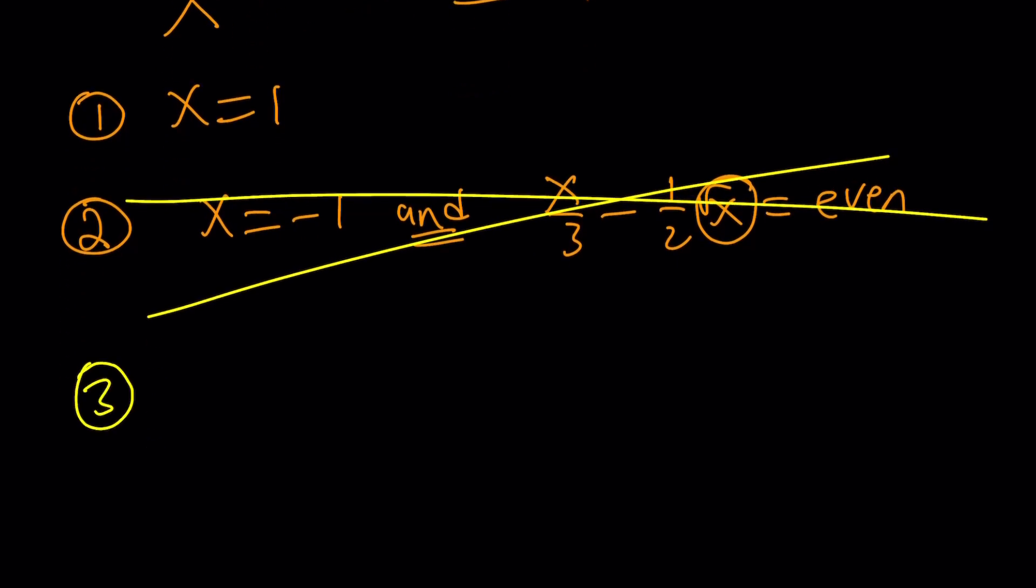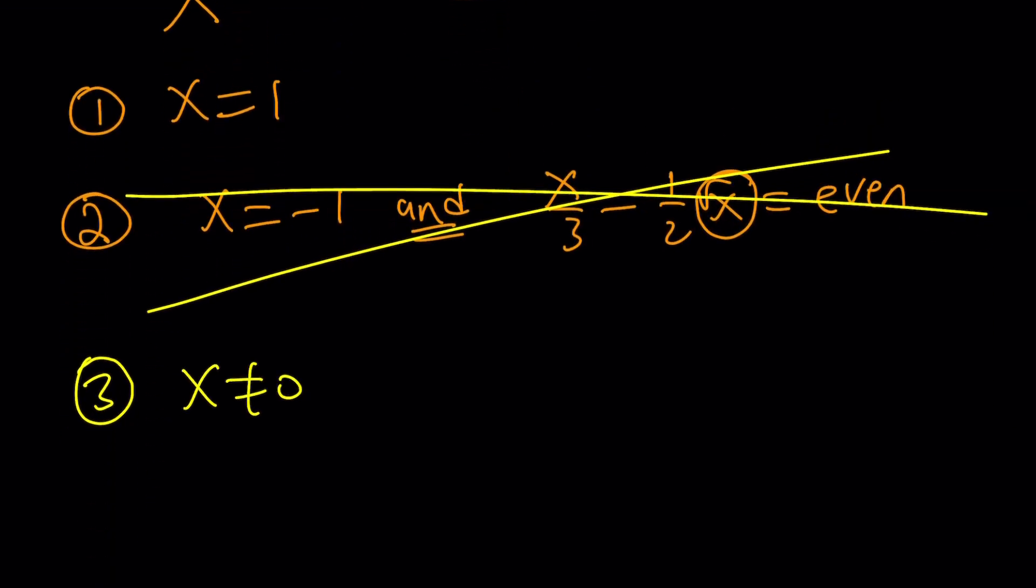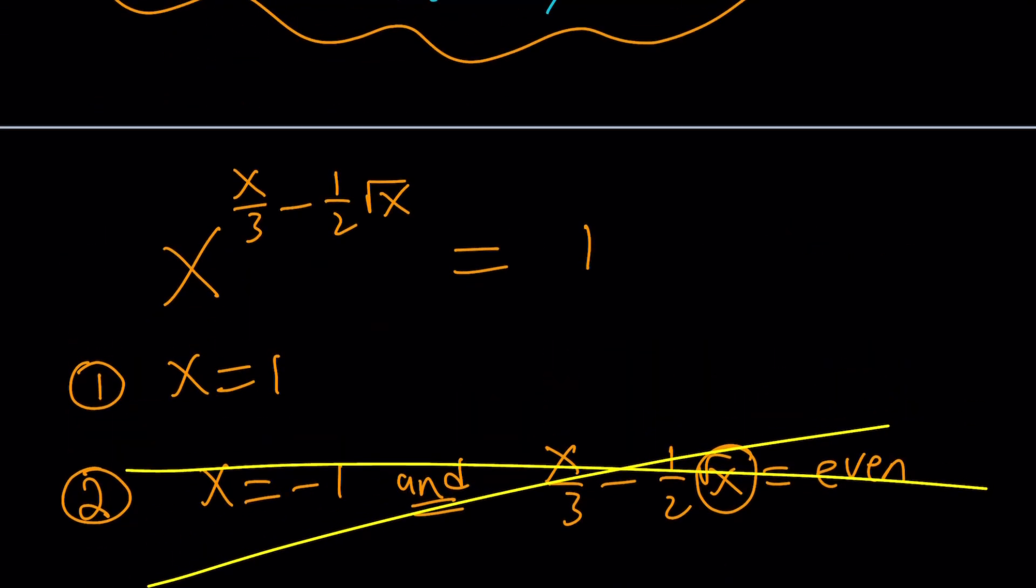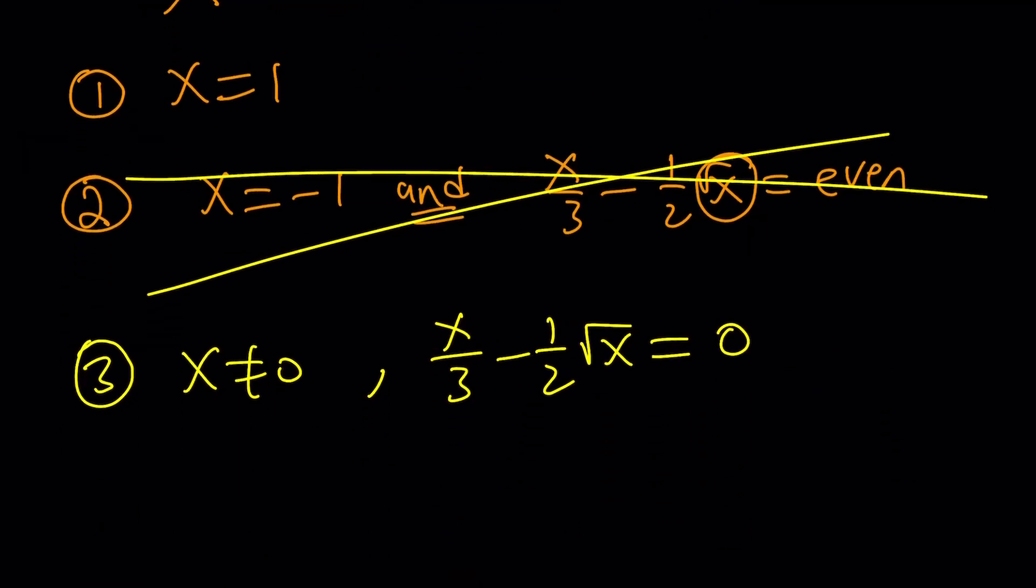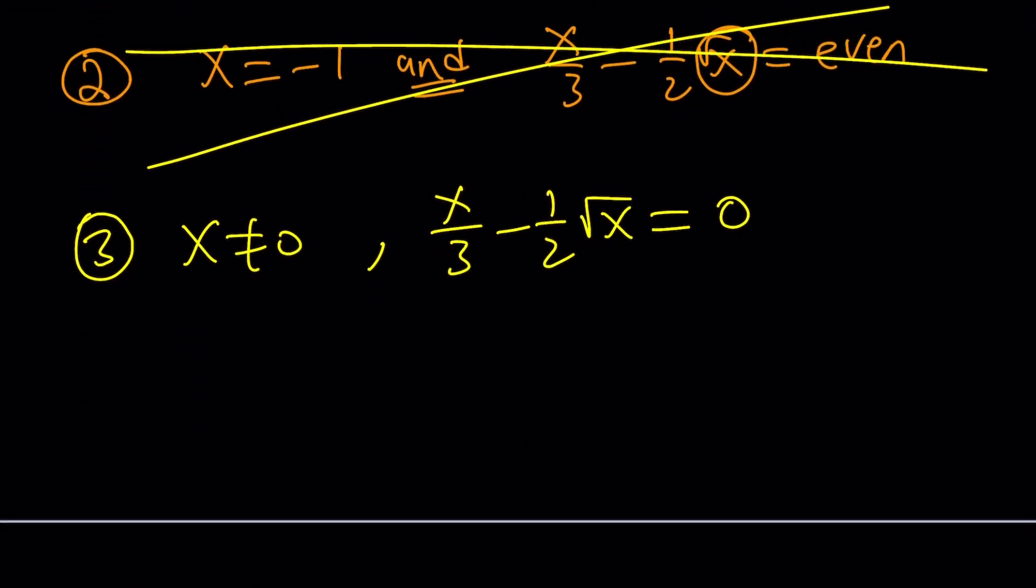Number 3. Number 3 is exponent is 0, base is not 0. So x does not equal 0. But I do want x over 3 minus 1 half of root x to be equal to 0. So that I have some non-zero number to the power 0 equals 1. Make sense? Cool. So this basically implies that, some examples could be 2 to the power of 0 equals 1, 1 third to the power of 0 equals 1, 1 billion to the power of 0 equals 1, negative 3.58678910, whatever, to the power of 0 is 1.